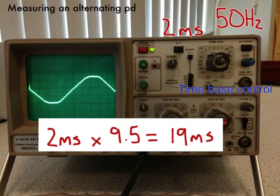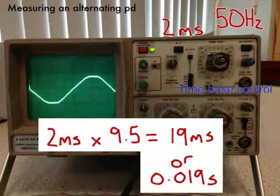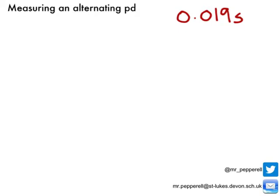I times that by 9.5 squares, so that tells me that the cycle of the wave takes 19 milliseconds, or I can also record that in seconds as well, 0.019 seconds. So, that is telling me how long each wave cycle is taking.